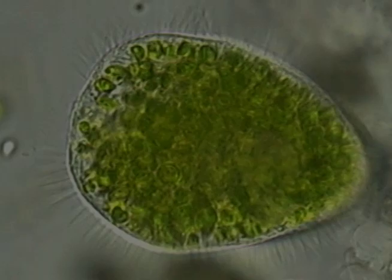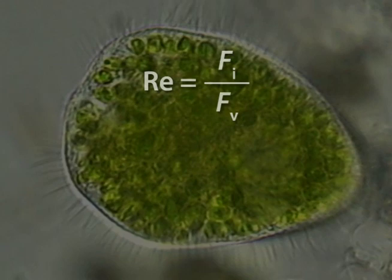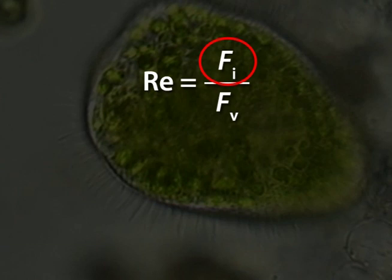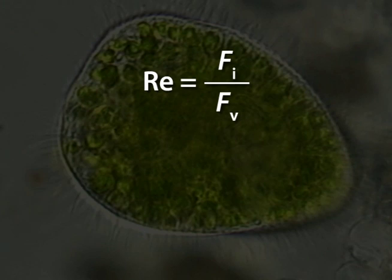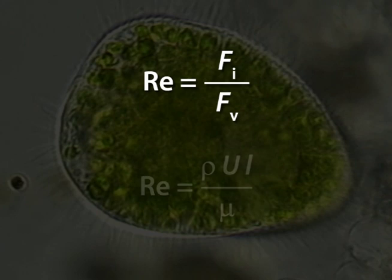Let's begin by reminding ourselves what the Reynolds number is. It's a ratio of forces acting on a body in a fluid — inertial forces in the numerator and viscous forces in the denominator. When Reynolds number is high, inertial forces prevail and bodies in motion tend to stay in motion. When Reynolds number is low, it's viscous forces that prevail, and this resists motion.